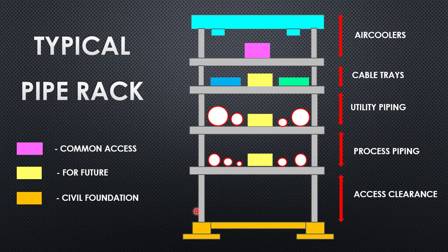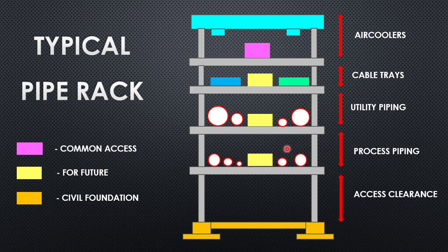Now we'll see the typical structure of a pipe rack, which is very important to understand. The first level is known as the access level, designed so that small vehicles like forklifts and small cranes can enter below the rack to carry out maintenance activities comfortably. The second level is for process piping, which is laid at this level to reduce the length of the piping and keep process flow efficient. The next level is for utilities such as steam, condensate, water, and air, which are planned above the process piping.